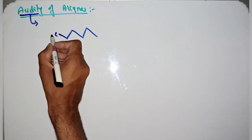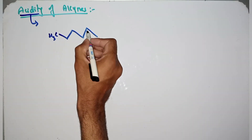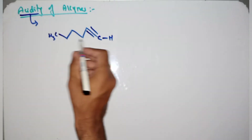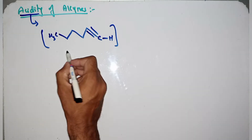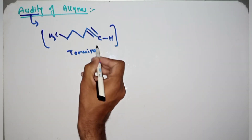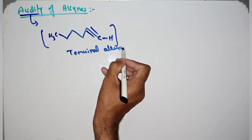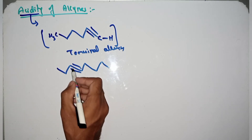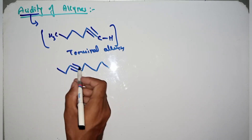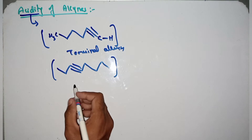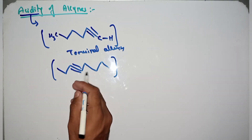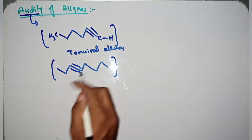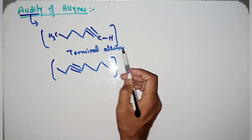Let's suppose this is one compound where a triple bond is present at the end — this is called a terminal alkyne. Similarly, in another case, here is also an alkyne with a triple bond present, but this alkyne cannot be called terminal because here the triple bond is not present at the terminal end.